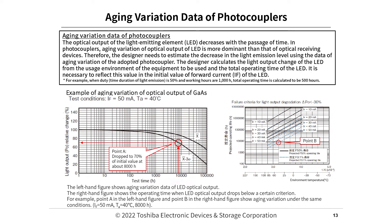Aging variation data of photocouplers. In photocouplers, aging variation of the optical output of the LED is more dominant than that of optical receiving devices. Therefore, the designer needs to estimate the decrease in light emission level using aging variation data of the adopted photocoupler. The designer calculates the light output change of the LED from the usage environment and the total operating time of the LED. For example, when the duty time of light emission is 50% and working hours are 1,000 hours, the total operating time is calculated to be 500 hours.